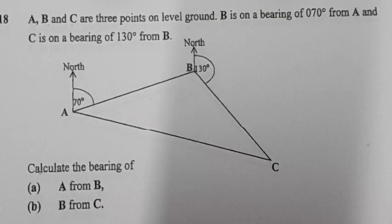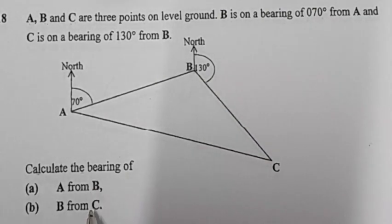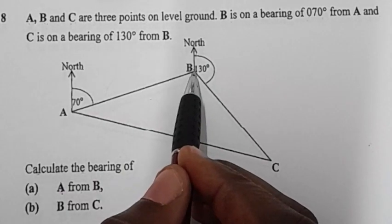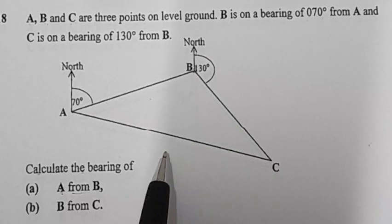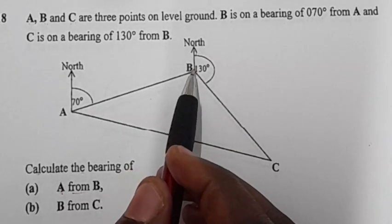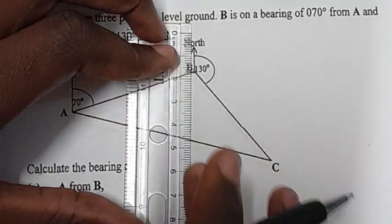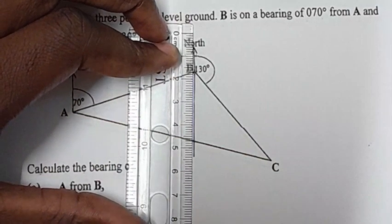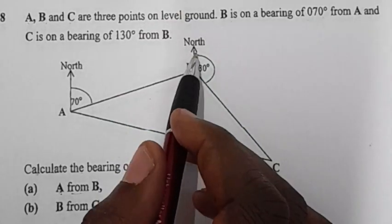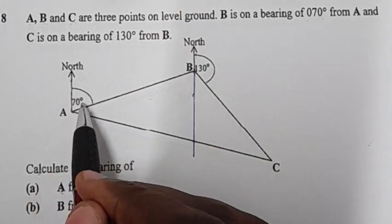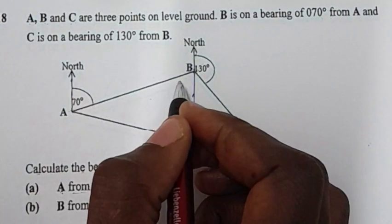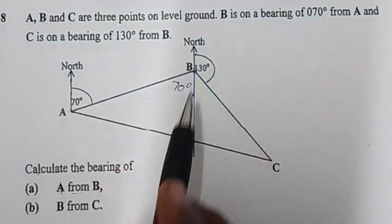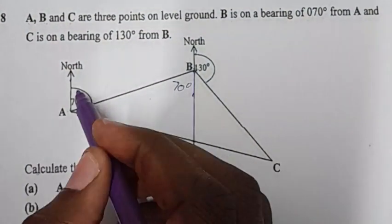Coming back to our question, they want us to find the bearing of A from B. So we are standing at B, and because we are standing at B we are going to draw a north at B — we just extend the existing north line. This north and the other north are parallel lines, and the line AB is a transversal cutting them. This angle is going to be 70° as well, because these are alternate angles, and alternate angles are equal.